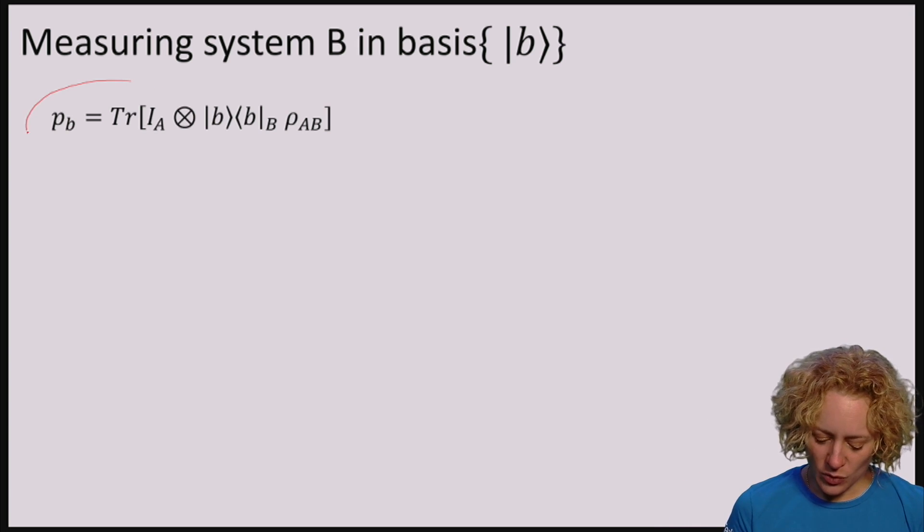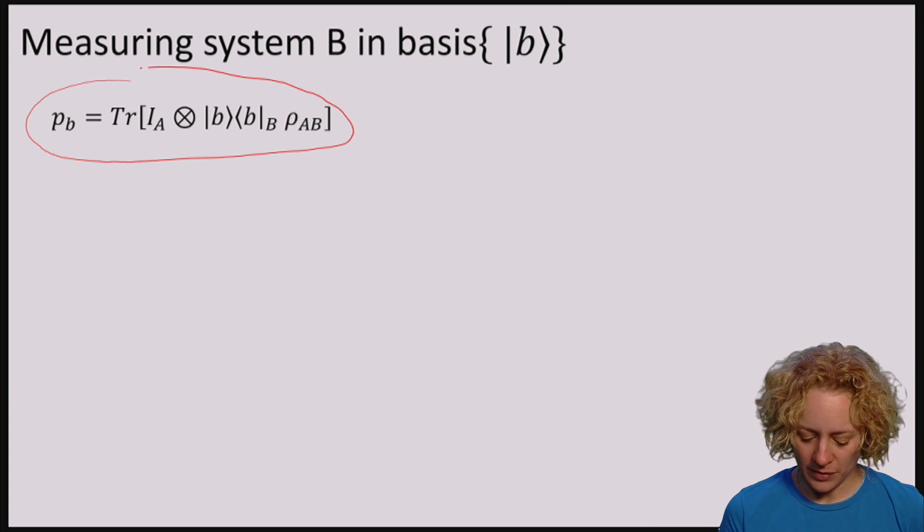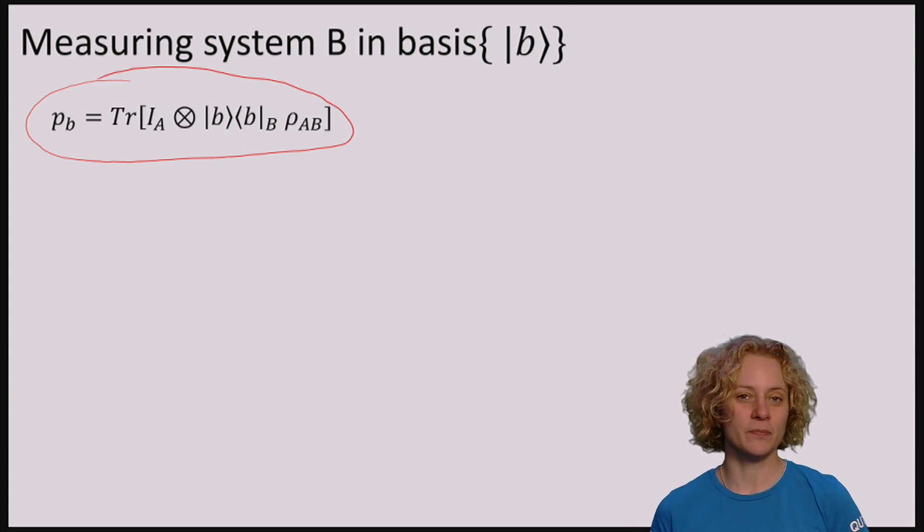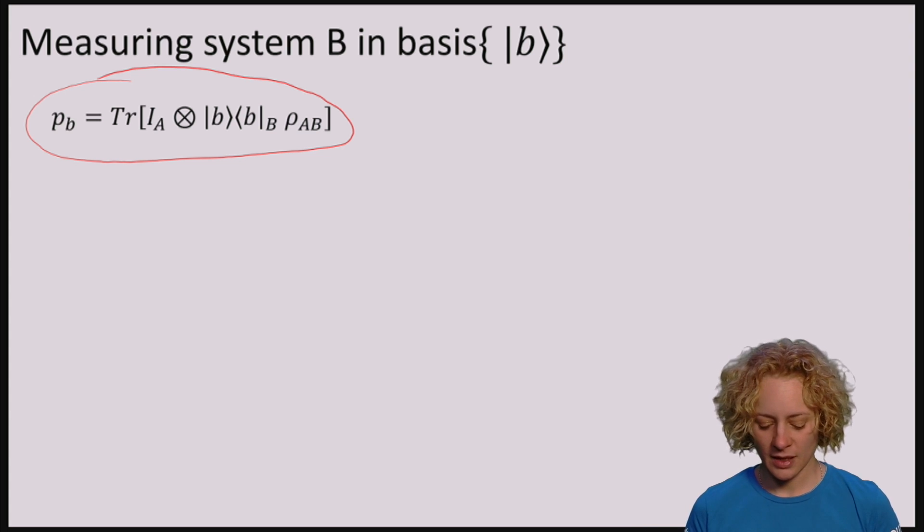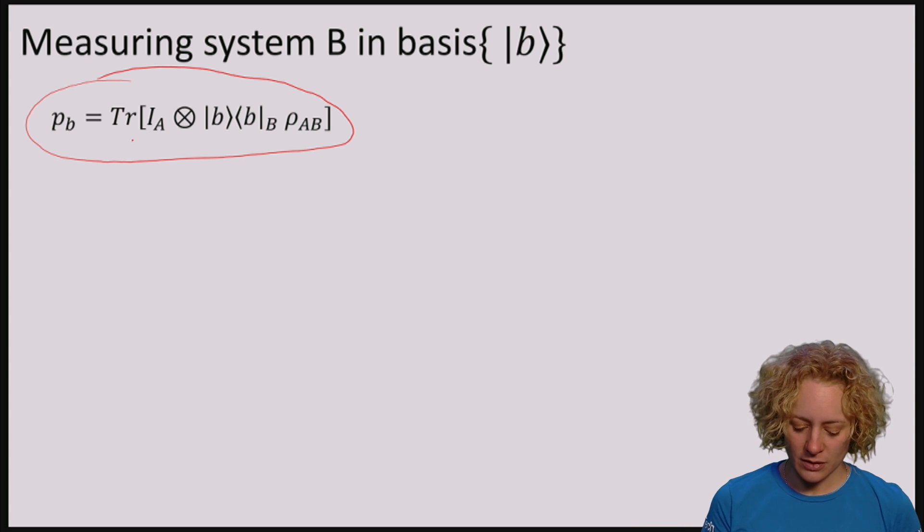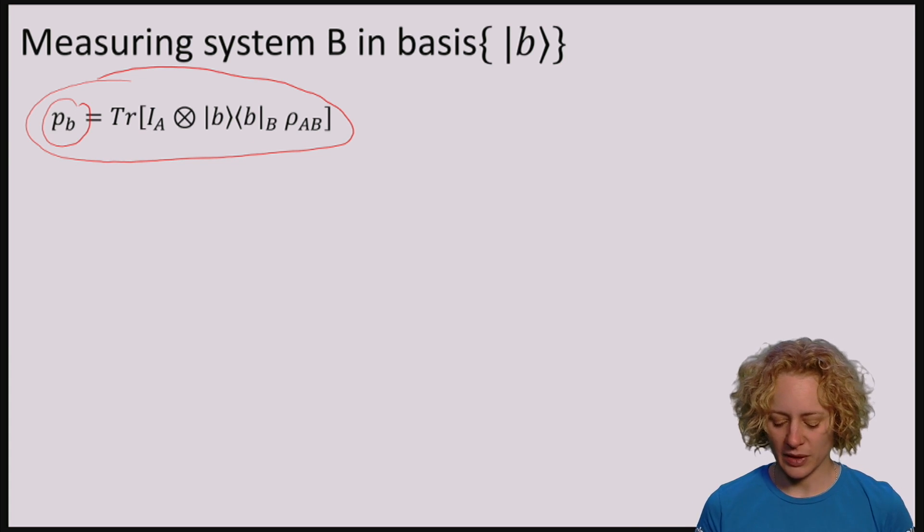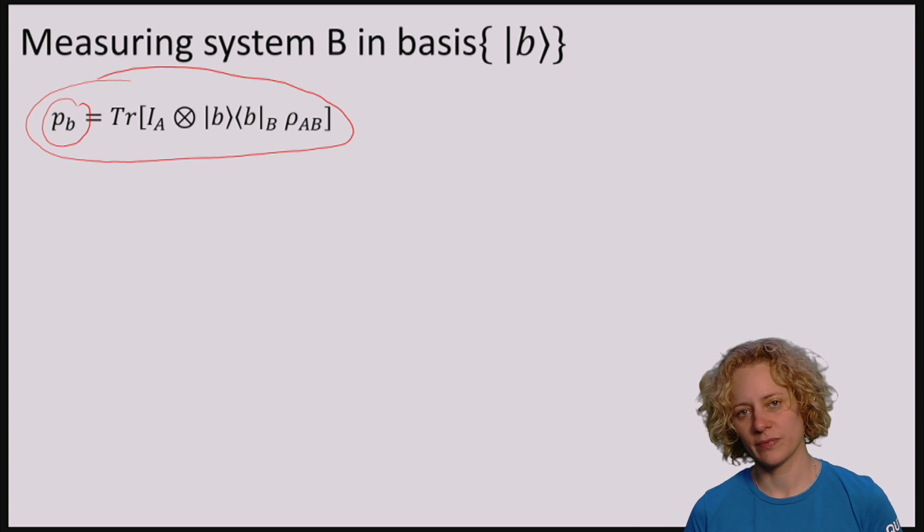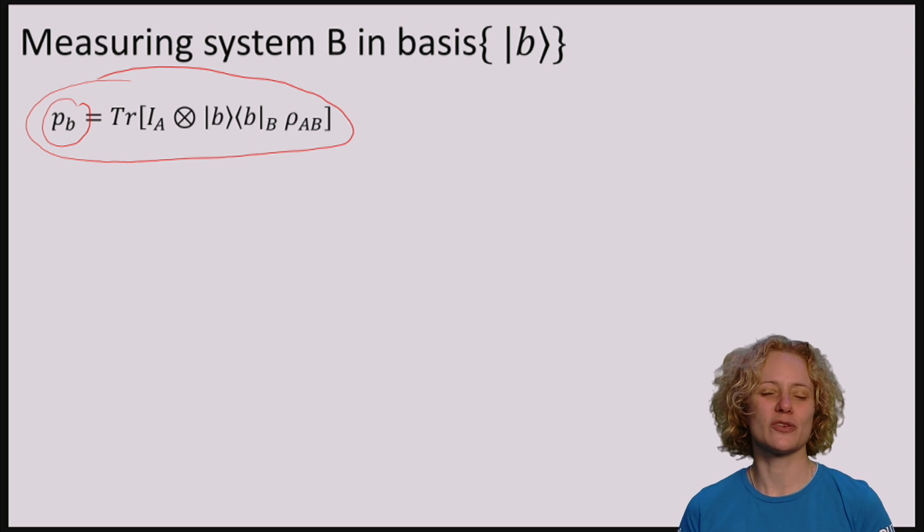You know the rule for computing probabilities of outcomes. So if I measure B in the standard basis, you've already learned that the probability of obtaining outcome B is given by this expression.